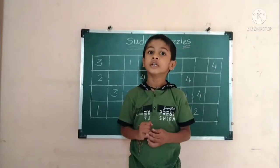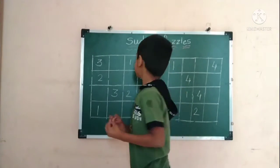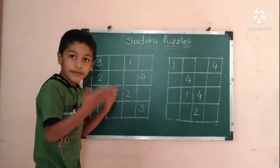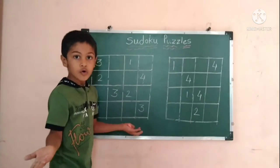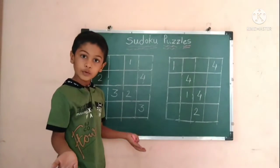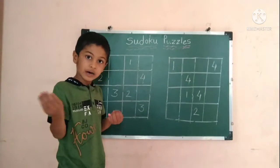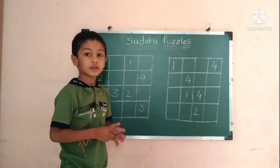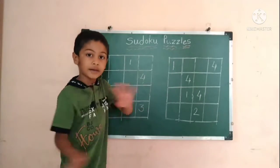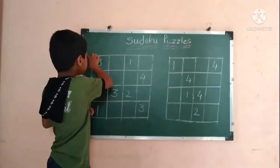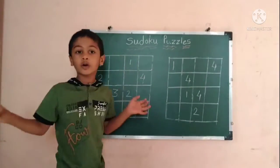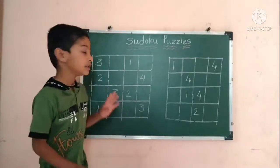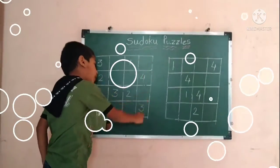First rule: each row and column can have one to four numbers. No number can be repeated in a row. No number can be repeated in a column.